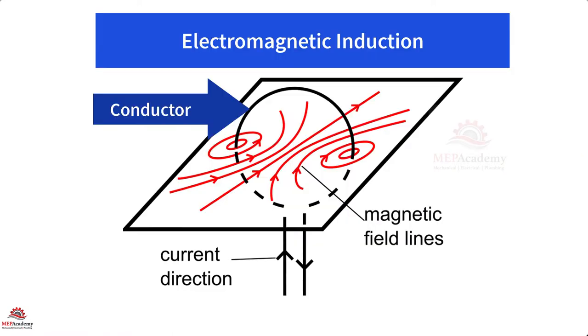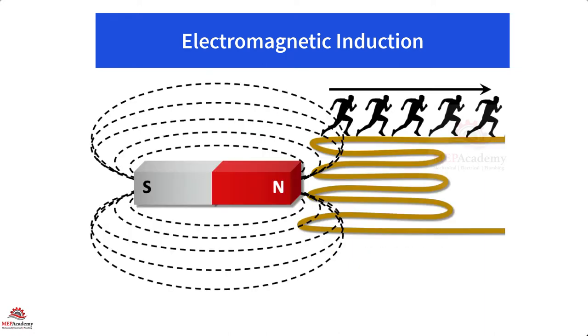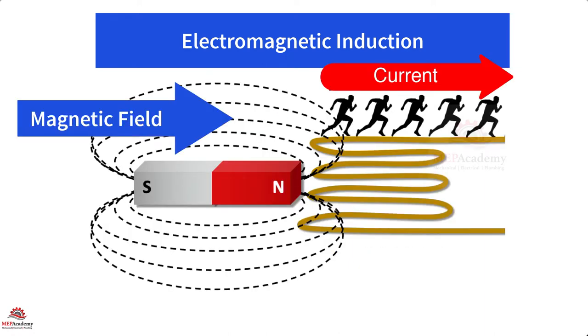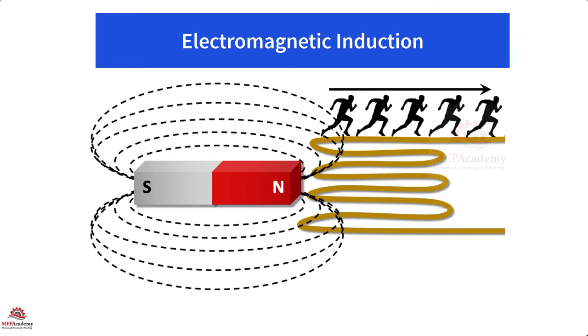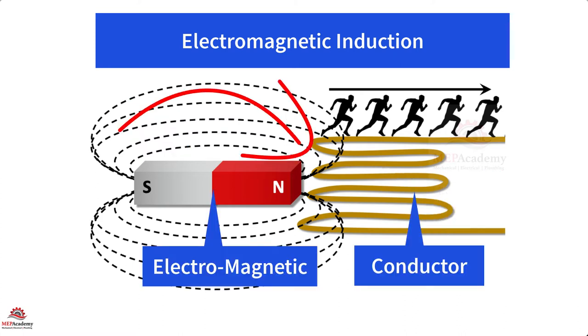Electromagnetic induction. A magnetic field can be created in a conductor by passing electricity through it, or an electrical current can be induced in a conductor by passing a magnetic field past the conductor. We can accomplish this with three items: a conductor, magnets, and movement between them.